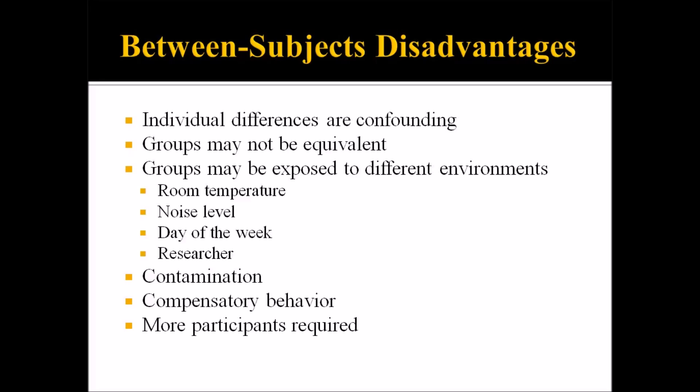You can also have compensatory behavior, another threat to internal validity. If something of value is given to one group and the other group becomes aware of this, pressure to reduce the differences between the groups may occur. And of course, with a between-subjects design, more participants are required.